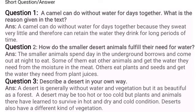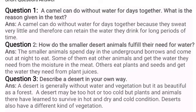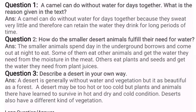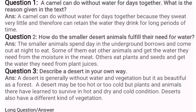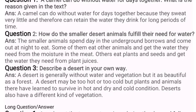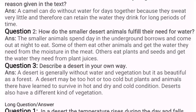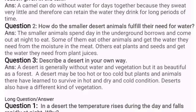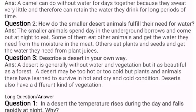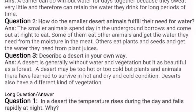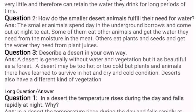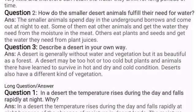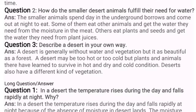Answer: A desert is generally without water and vegetation, but it is as beautiful as a forest. A desert may be too hot or too cold, but plants and animals there have learned to survive in hot, dry, and cold conditions. Deserts also have a different kind of vegetation — some kinds of plants do grow in deserts.